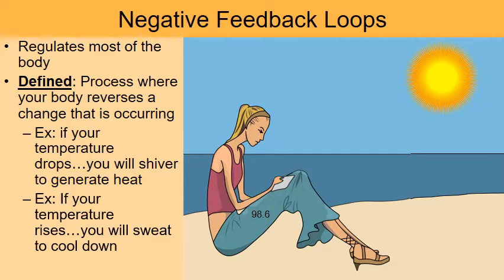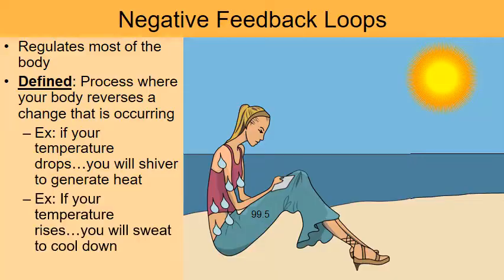The opposite is true as well. Here we have a young lady at the beach on a nice hot day. The longer she's exposed to the heat, look what's happening to her core body temperature — it's increasing from 98.6 up to 99.7, then 100.1. Eventually we all start to sweat and perspire. As the sweat evaporates, it pulls some heat away from our body. The more we sweat, the more heat is removed, and eventually we get back to our set point of 98.6 degrees. Notice: negative feedback reversed the change that was occurring.